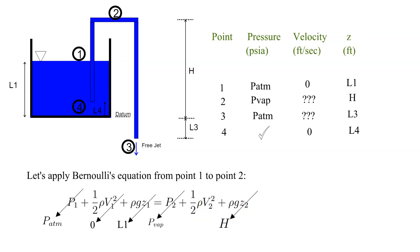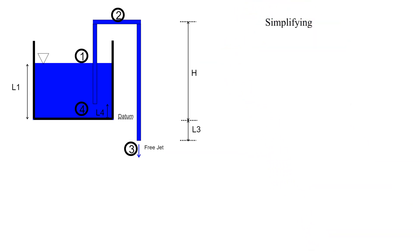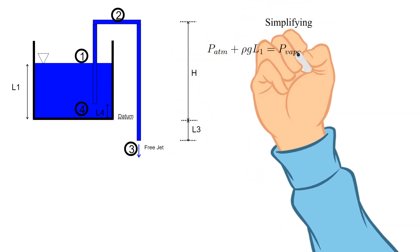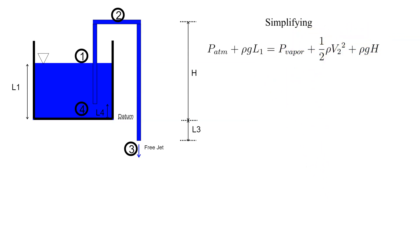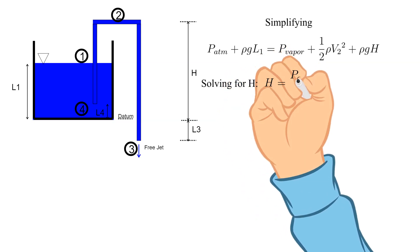The velocity at point 2 is unknown. The elevation at point 2 is H, which is what we are going to determine. Simplifying. P atmosphere plus rho g L1 equals vapor pressure plus 1 half rho v2 squared plus rho g H.